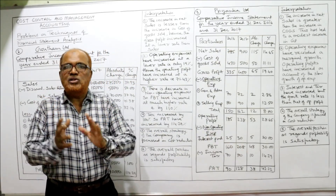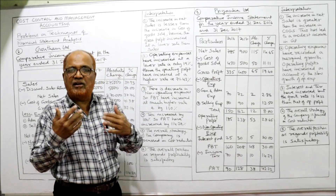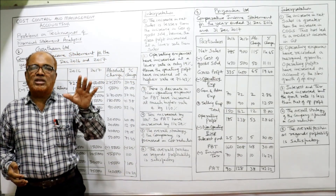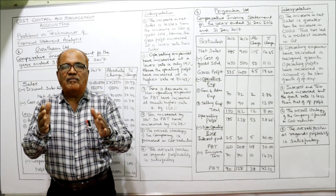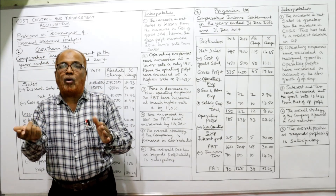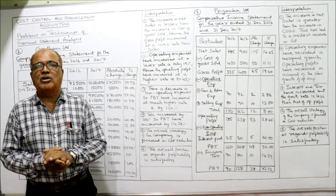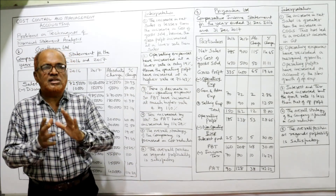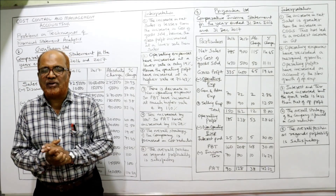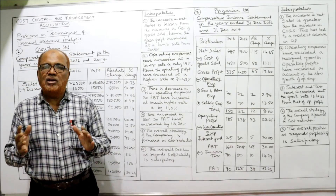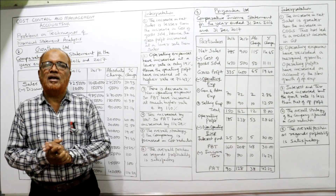This video is very important because I have explained how to give the interpretation. In examinations, they will ask you to prepare the comparative income statement and also give the interpretation — you have to give it like this. This is the end of problem number three. Three main problems have been completed. We will continue with the next problem in the next video.